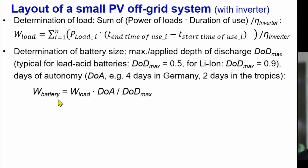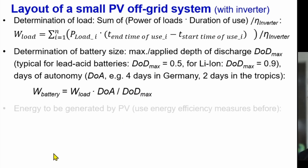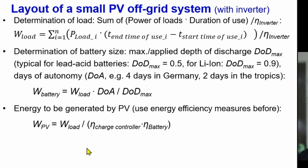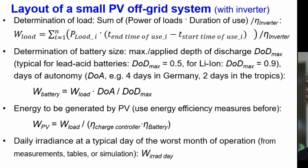The energy to be stored in the battery equals the energy needed by the load multiplied by the days of autonomy, divided by the maximum depth of discharge. The energy to be generated by photovoltaics must also account for battery efficiency and the charge controller efficiency. We take the daily irradiance for the worst month of operation — typically the worst month of the year, or the relevant season for specific applications like irrigation.